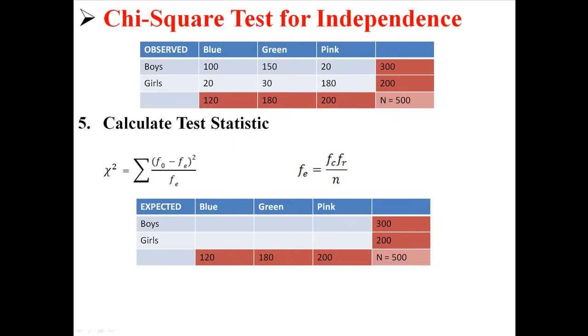So for example, let's say we wanted to find how many boys are expected to have chosen blue as their favorite color. We take the column total for blue, which is 120, and multiply it by the row total for boys, which is 300, and then we divide by the total number of subjects, which is 72. And we find out that in this sample, we would have expected 72 boys to choose blue as their favorite color.